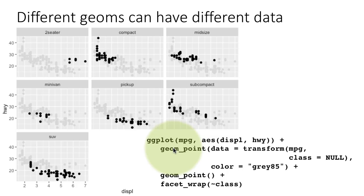How is that achieved? That is achieved in the following way. We are saying ggplot mpg, aesthetic displacement highway, geom_point data equals transform mpg class equals null. That is, we are saying for this layer, the data is going to be not the entire data set, not the whole mpg, but the data set mpg with the class column removed. We said class equals null. So for this particular layer of geom_point, the data does not have a column called class.